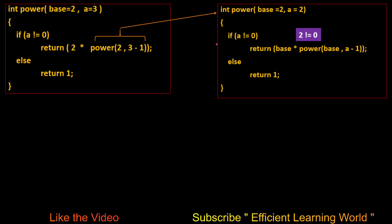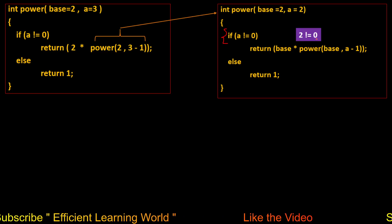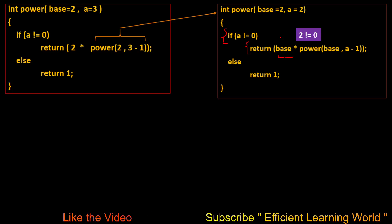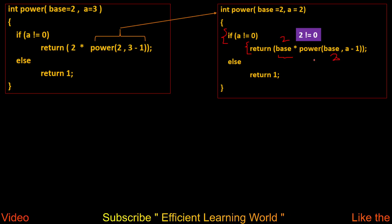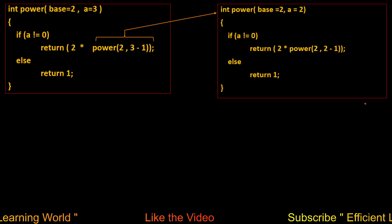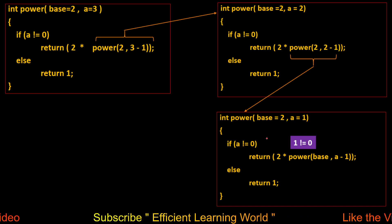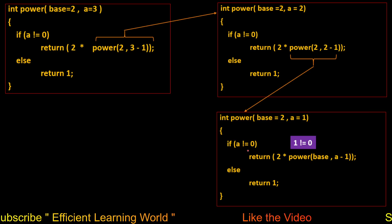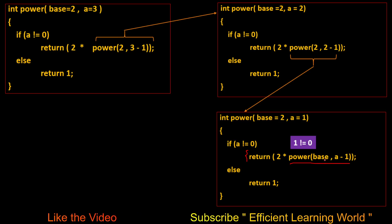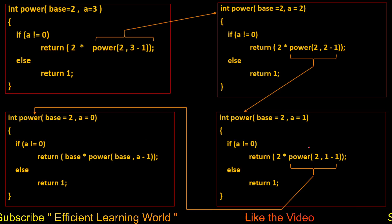This calls power(2, 2-1) = power(2, 1). Again the condition is checked: 1≠0 is true, so we call power(2, 1-1) = power(2, 0). Now base=2 and a=0 are passed as arguments. The compiler checks the condition: is 0≠0? This is false, so the if body will not execute.